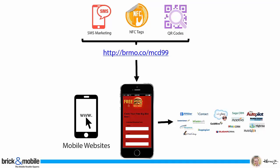The SMS, the NFC, and the QR codes all in this instance point to the same short URL. That short URL points to the mobile web landing page, the lead gen page you created, and then pushes behind the scenes to an autoresponder of choice. So this is the acquisition.